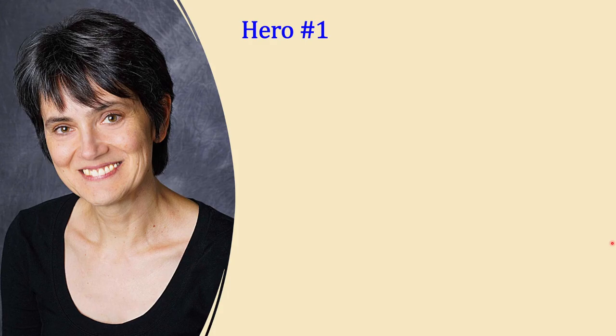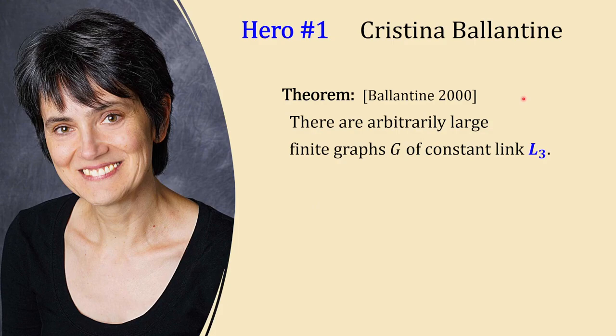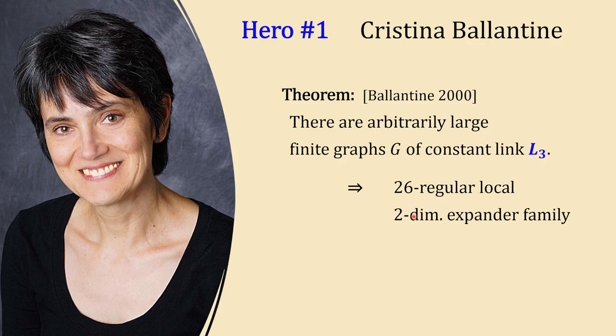Our first hero is Professor Christina Ballantine. The related hero is the graph L3, whose second largest eigenvalue is sqrt(3)/4, which is indeed smaller than 1/2. A theorem from 2000 by Ballantine shows there are arbitrarily large finite graphs G of constant link L3. From this, one can get 26-regular local two-dimensional expander families.